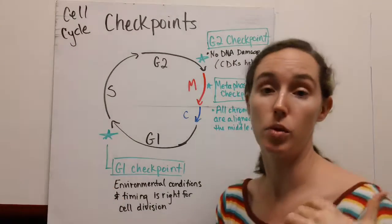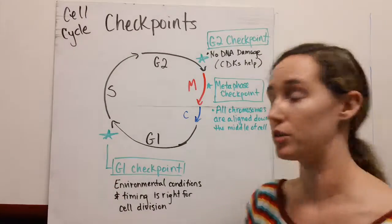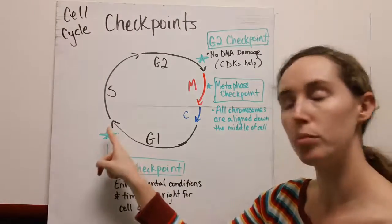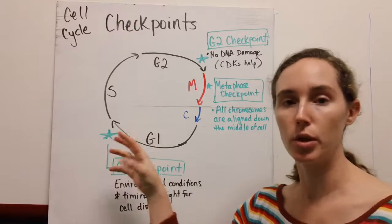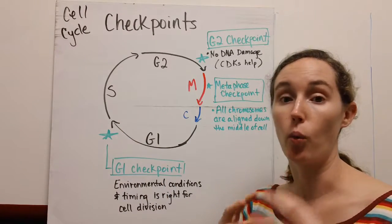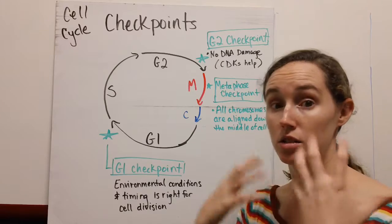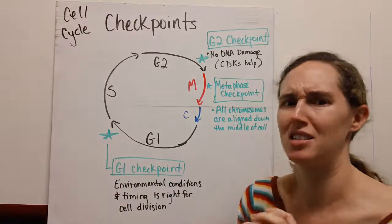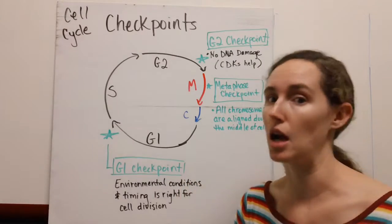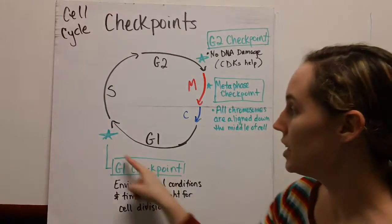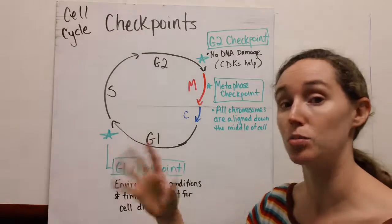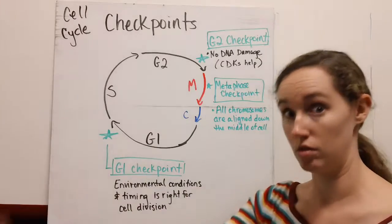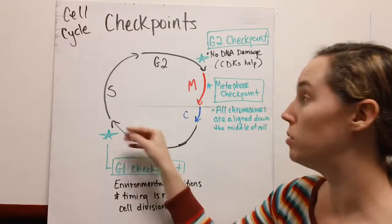We begin with G1 as part of interphase, so your cell is growing. During this time, before it moves into replication, this is where your cell makes the decision about whether or not it's ready to divide. Are the environmental conditions good? Is the cell size too big? If it is, it's going to be time to divide. At the end of G1, that's when your cell makes the decision and passes the checkpoint if it feels like cell division is the right thing to do.